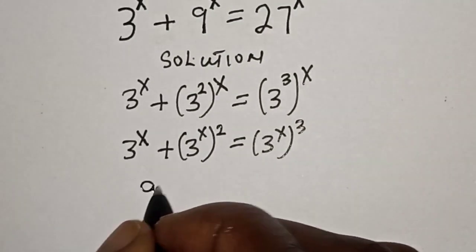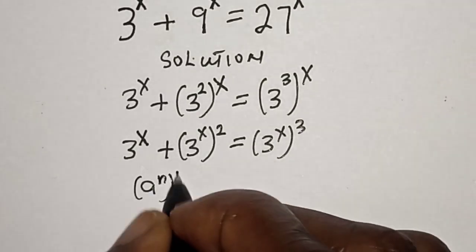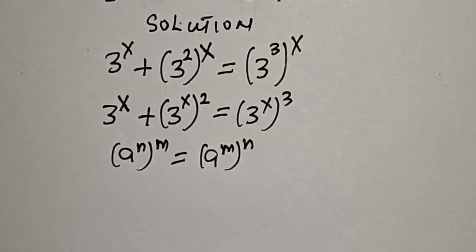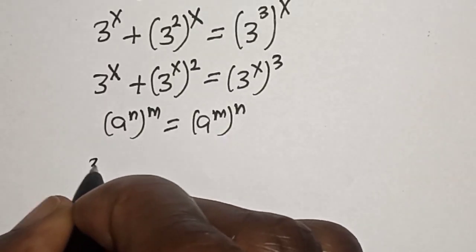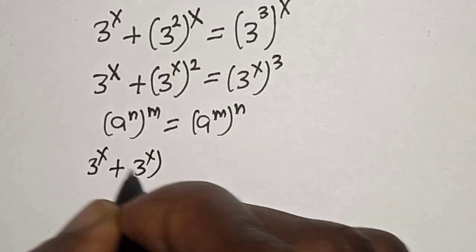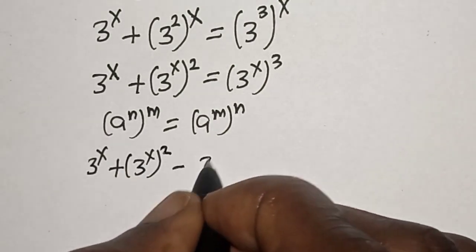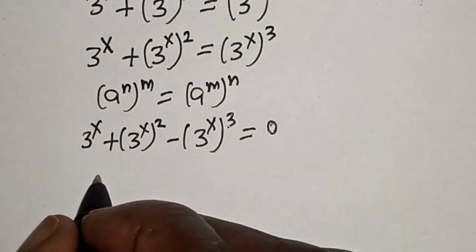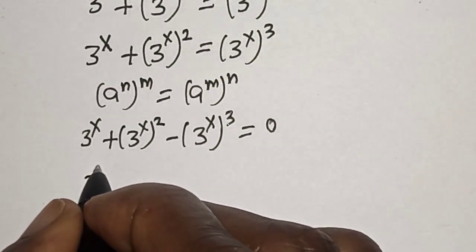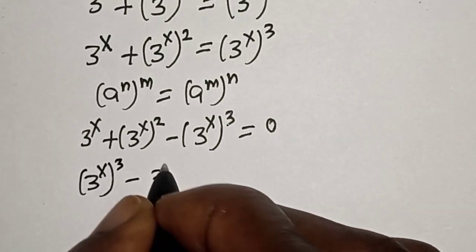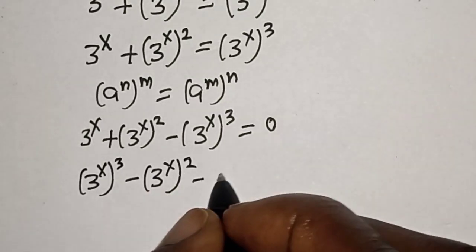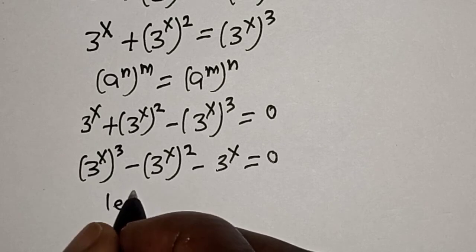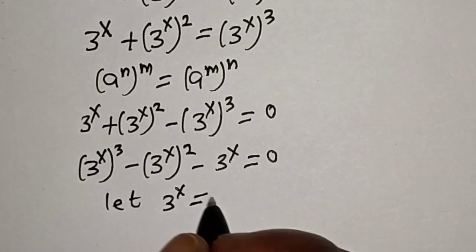That is from this rule that A raised to power n raised to power m is equal to A raised to power m raised to power n. Now, we have T raised to power s plus T raised to power s squared minus T raised to power s raised to power 3 is equal to 0. Then let's rearrange. From here, let T raised to power s equal to Y.